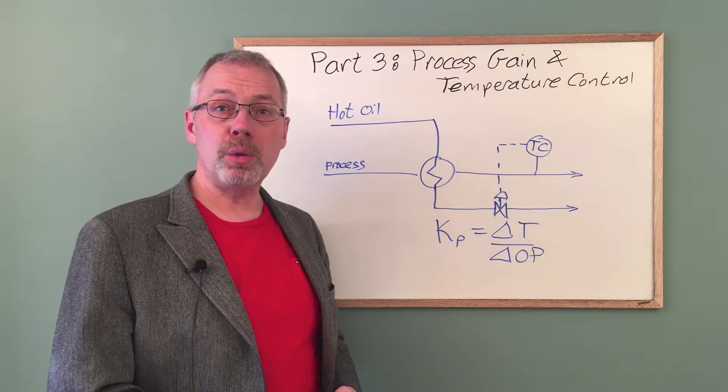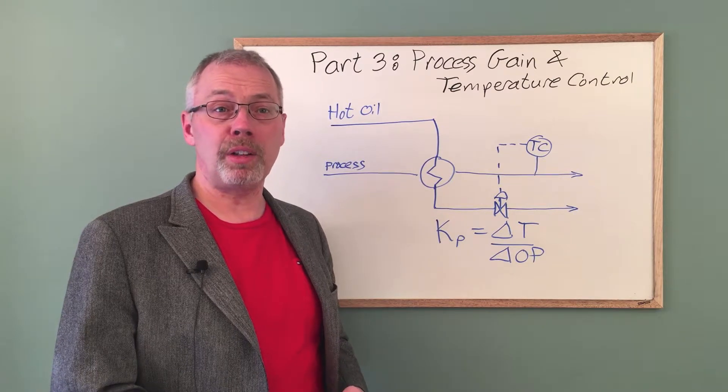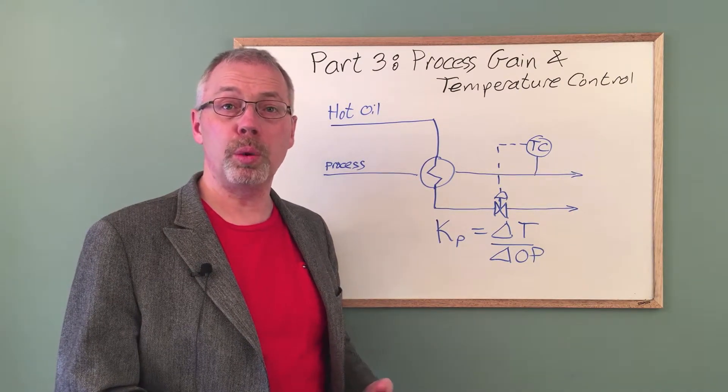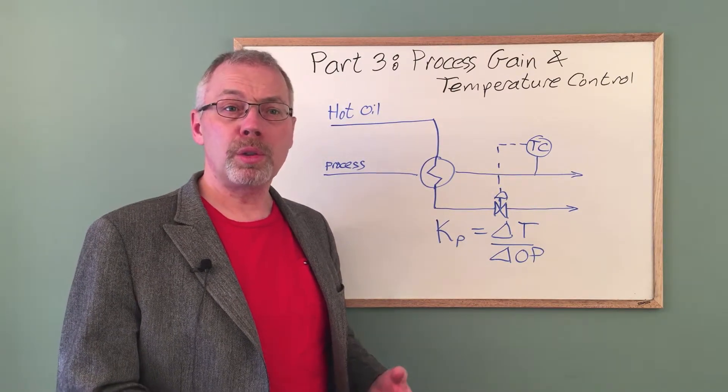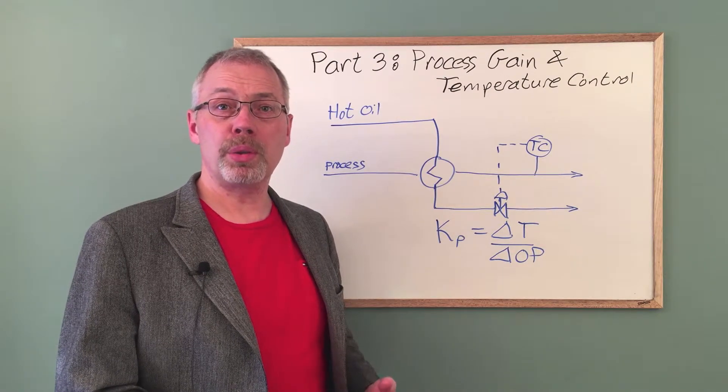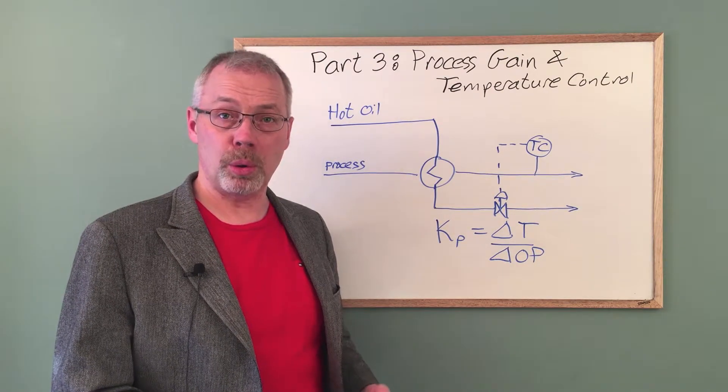If the process gain is uniform over a wide range of valve positions, then the control loop will be very robust. Let's look at some math to determine the process gain for a temperature control loop.